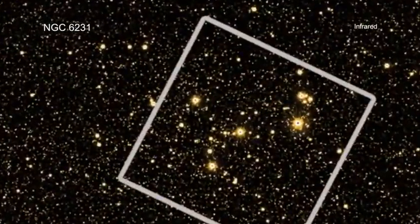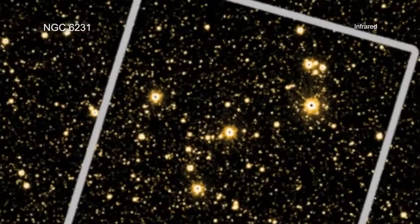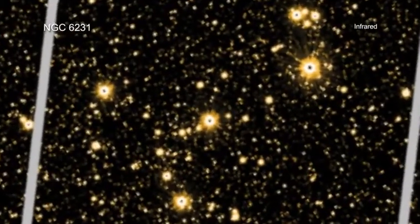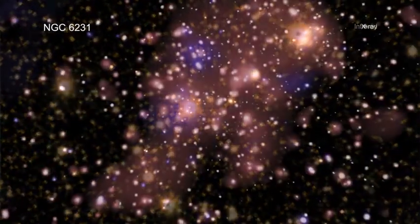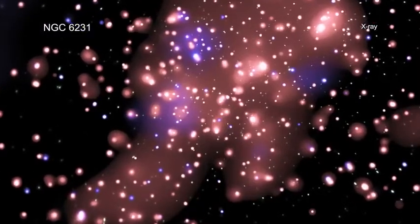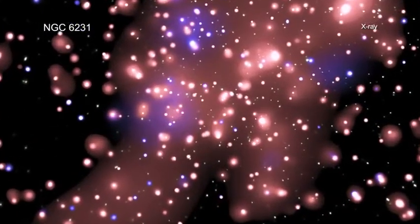NGC 6231, located about 5,200 light-years from Earth, is an ideal testbed for studying a stellar cluster at a critical stage of its evolution, not long after star formation has stopped.